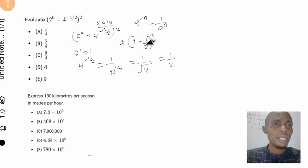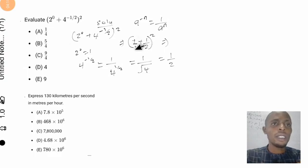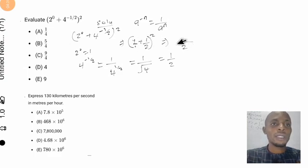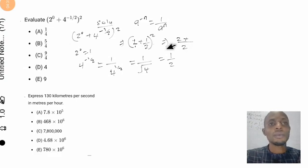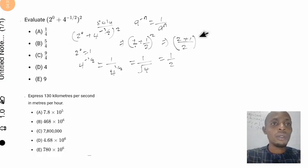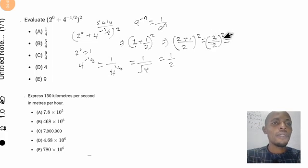Inside the bracket we now need to compute one plus one-half. To add these, we write 1 as a fraction over 1 and find the LCM of 1 and 2, which is 2. So we get: 2 times 1 over 2, plus 1 times 1 over 2, giving us 2 plus 1 all over 2. That equals three-halves, which is 3 over 2. The whole expression is still raised to the power of two.